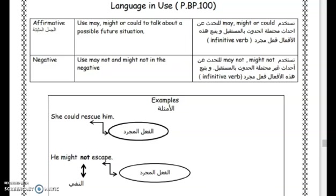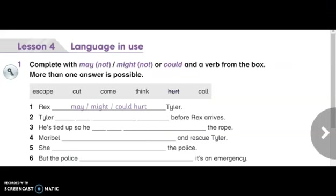Now, move to the activities in your workbook, page 85. Exercise number one: complete with may, may not, might, might not, or could, and a verb form from the box. More than one answer is possible. You have to use the affirmative or negative form of the modals, and also choose one main verb from: escape, cut, come, think, hurt, and call.